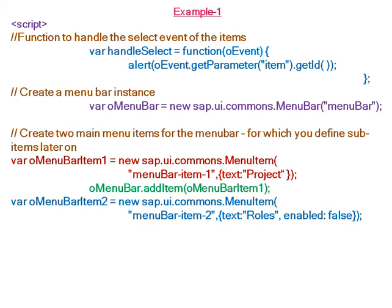The second menu bar item is 'Roles', which is in a disabled state as the property enabled is set to false. This Roles menu bar item is also added to the menu bar. So now in the menu bar, we have two menu items: the first one is Project and the second one is Roles.